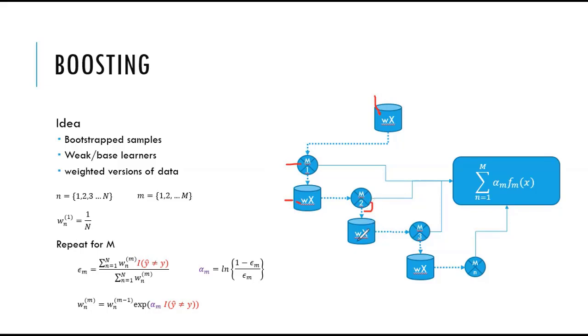Still, M2 will be making some mistakes. So we will create a new set of weights for those examples that were not correctly classified by M2, and we go to M3, and so on. We train N models using weighted samples.